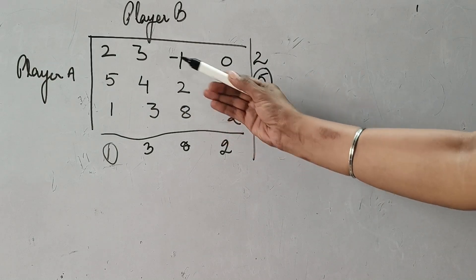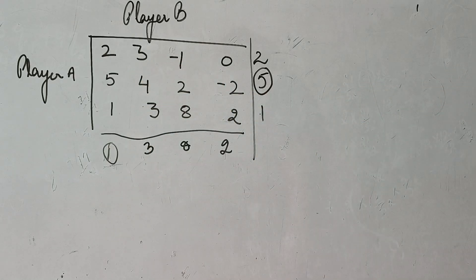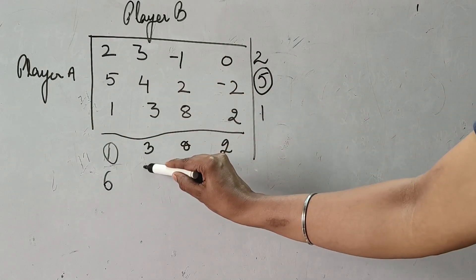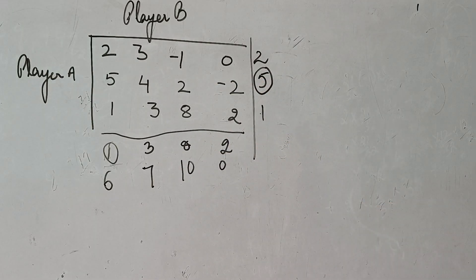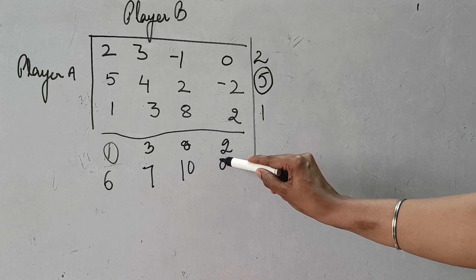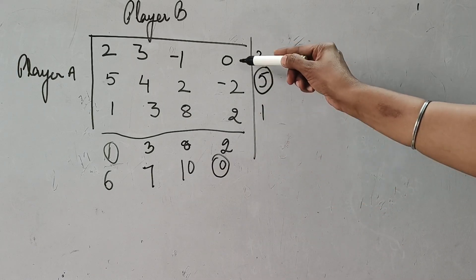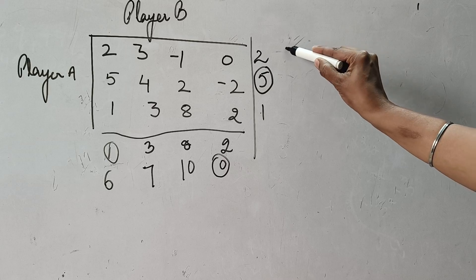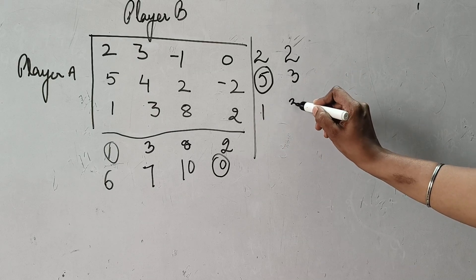Adding the new row to the previous: 5+1=6, 4+3=7, 2+8=10, minus 2+2=0. Again choose the minimum out of this row — 0 is the minimum, circle it. Go inside that column; values are 0, minus 2, 2. Add to the column already taken out: 0+2=2, minus 2+5=3, 2+1=3. Now choose the column-wise maximum.